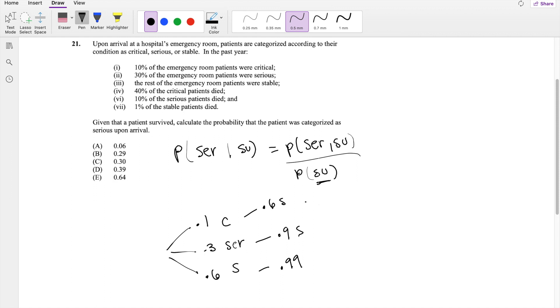So if I'm looking for critical and survived, for example, it's going to be 0.1 times 0.6, which is equal to 0.06. Likewise, this is going to be 0.3 times 0.9, which is equal to 0.27. And 0.6 times 0.99, this is equal to 0.594.